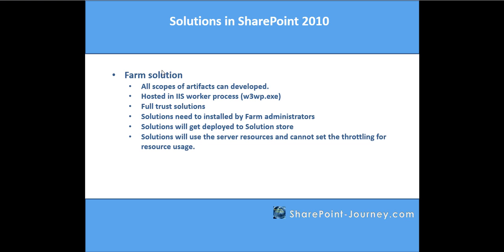We have seen while going through the feature session what is the scope and what are the types of scopes. Basically we have four types of scopes: web, site, web application, and farm level scopes. So at all levels you can develop solutions which are farm type. These farm solutions will be hosted in IIS worker process — this will be run with the help of W3WP process.